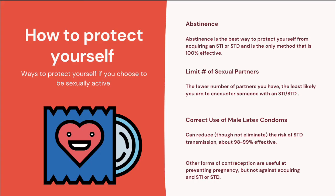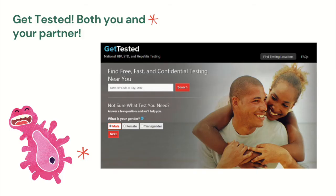You want to use male latex condoms. The correct use of latex condoms can really reduce — although not eliminate — the risk of transmission. They are about 98 to 99% effective at reducing the risk of getting an STI or STD, and they're also great at preventing pregnancy. Female condoms are about 84–85% effective and are still better than no protection at all. Other forms of contraception like birth control are very useful at preventing pregnancy, but taking birth control is not going to protect you against getting an STI.